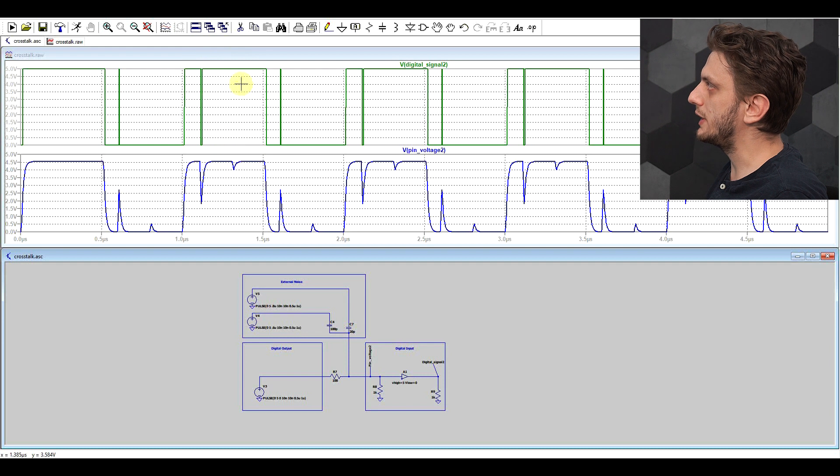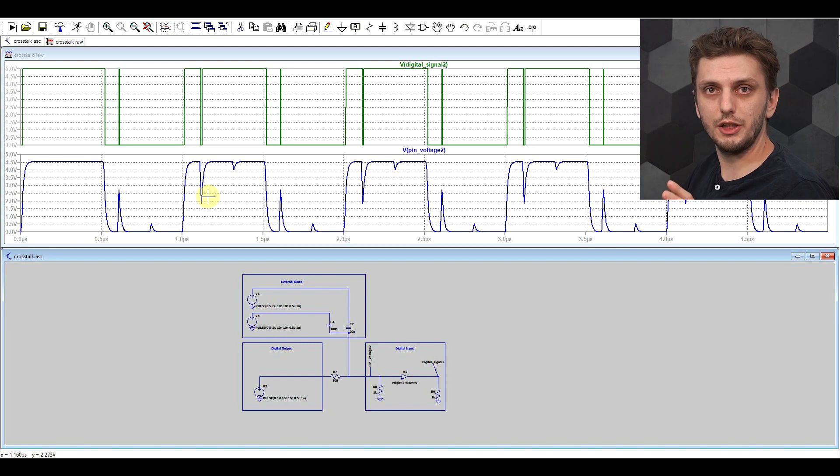So if the glitch is small enough then we don't care, but if it's large enough, it will touch the threshold voltage and it will be interpreted as a logical state flip. And this will completely ruin your communication.